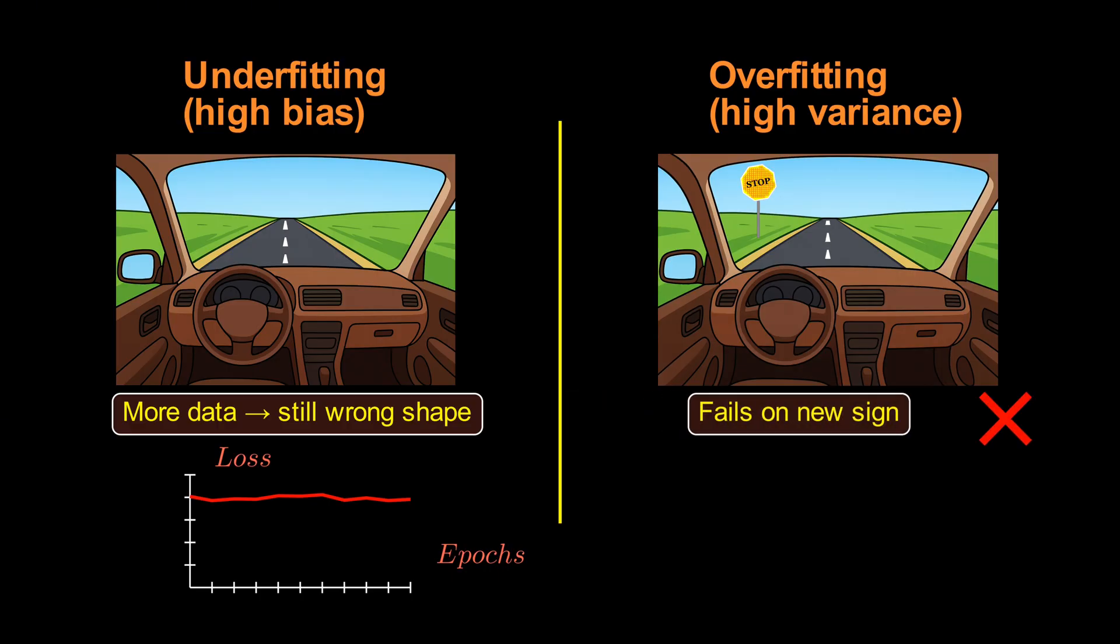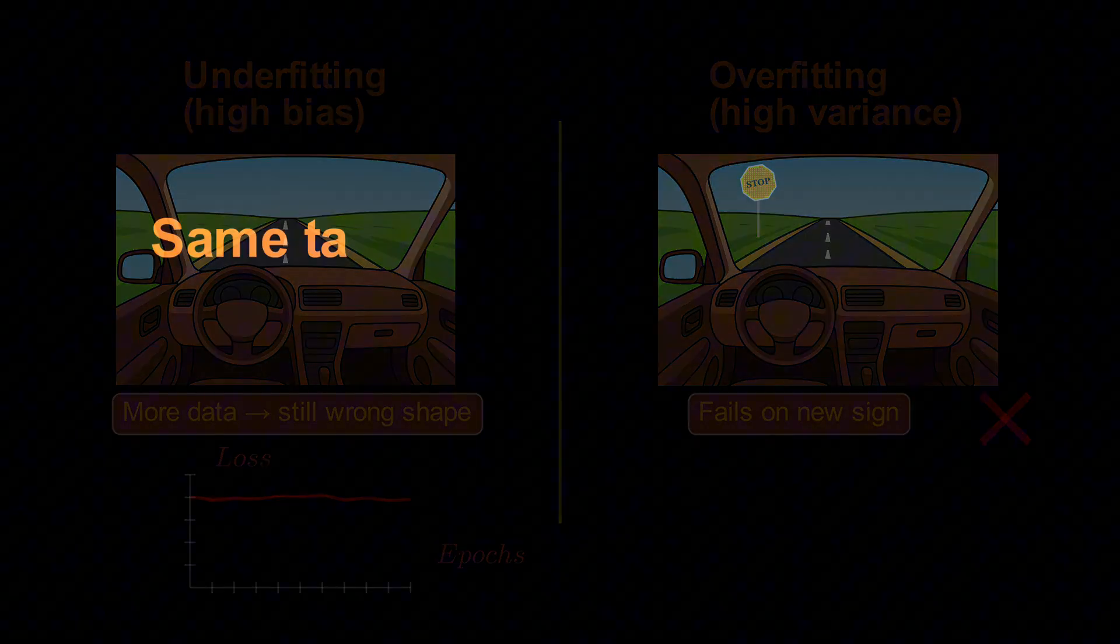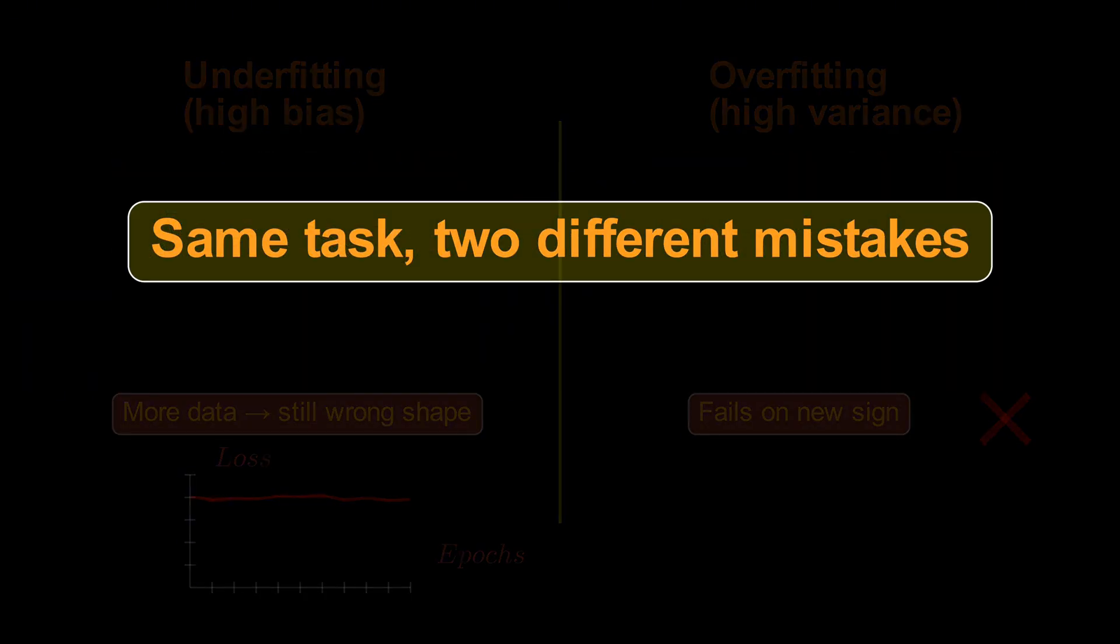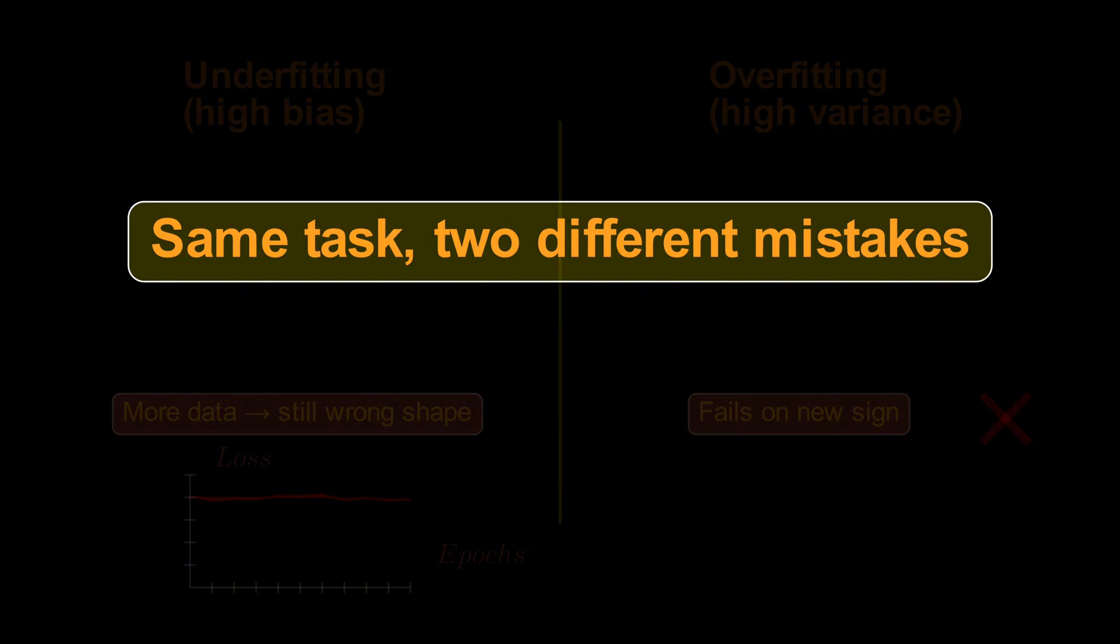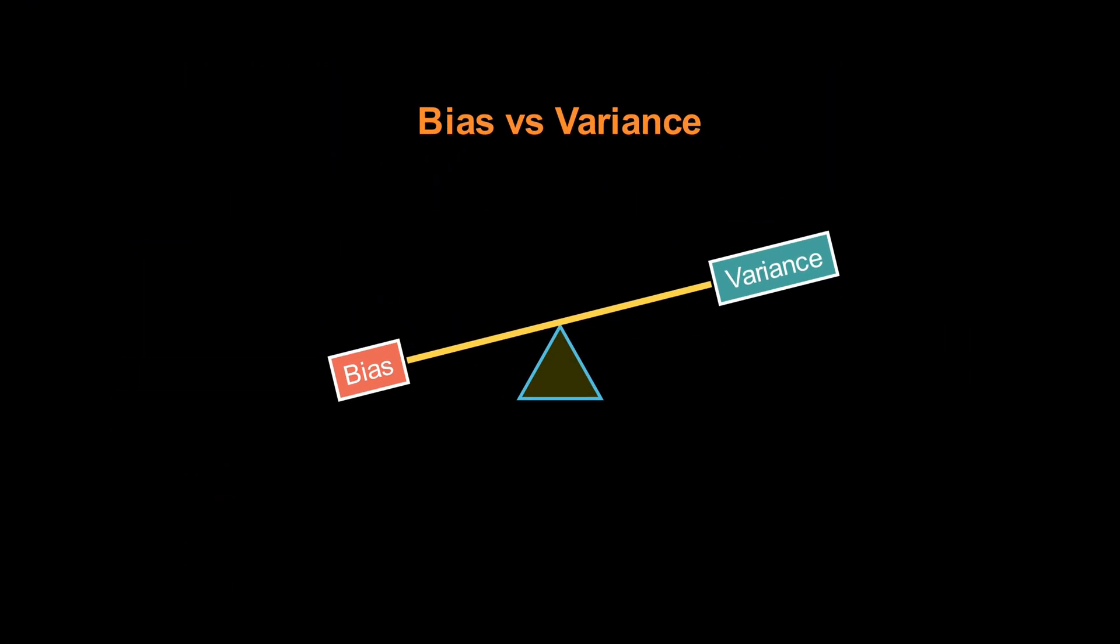Why would the same machine learning algorithm make such different mistakes? The answer lies in a fundamental concept buried inside every machine learning model. Bias vs. Variance.